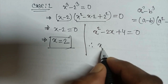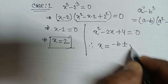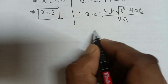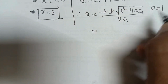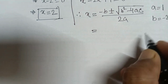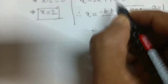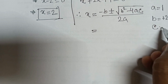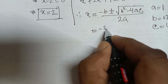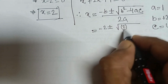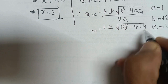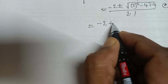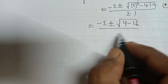For the other factor, x squared plus 2x plus 4 equals 0. Using the quadratic formula x equals minus b plus or minus root of b squared minus 4ac divided by 2a, with a equals 1, b equals 2, and c equals 4: x equals minus 2 plus or minus root of 4 minus 16 divided by 2.